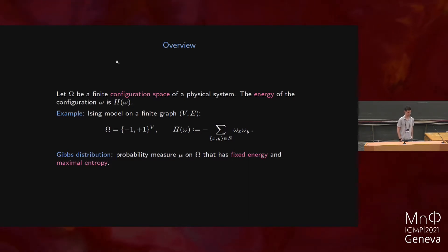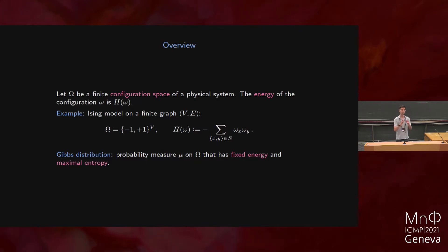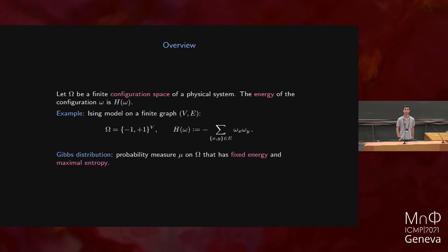An example which will be familiar — this is a standard example — is the Ising model. Take a finite graph, and the configuration is going to be at every vertex of the graph a spin which is either plus one or minus one. The energy of this configuration: you take all edges and consider the product of the two incident spins and add them up over all edges. That gives you the total energy of your configuration.